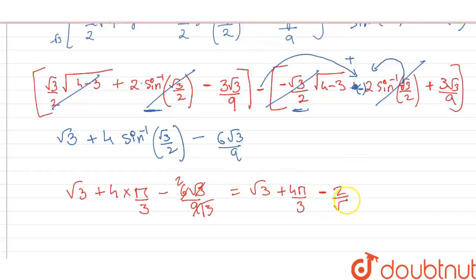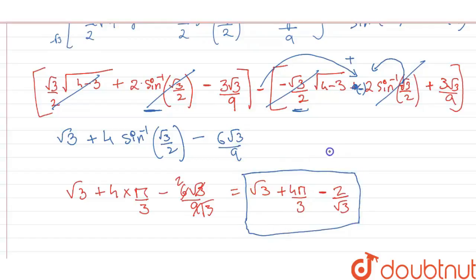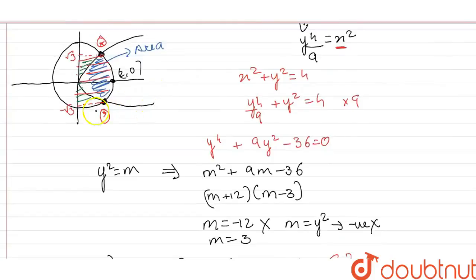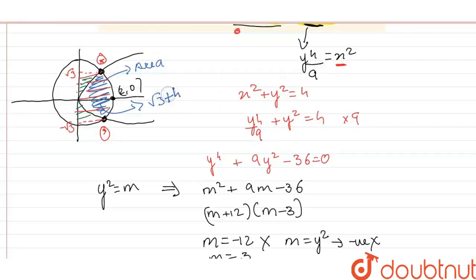After simplification, the final answer is √3 + 4π/3 − 2/√3. This is the required area bounded by the two curves. Thank you.